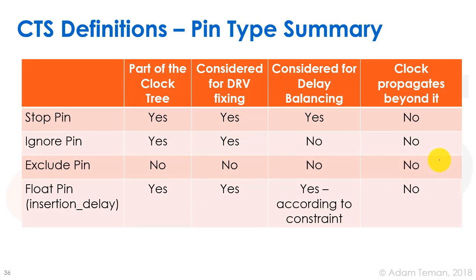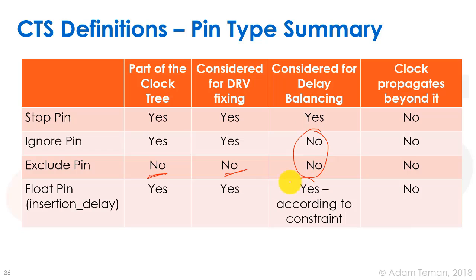To summarize: the table shows stop pins, ignore pins, exclude pins, and float/insertion delay pins. Only exclude pins are not part of the clock tree, and only exclude pins will not have DRV fixing applied. Exclude and ignore pins will not be considered for delay balancing. Float pins will be balanced according to the constraint — earlier or later than the average insertion delay — but the clock does not propagate beyond them, though in newer versions with ignore pins it may propagate beyond.